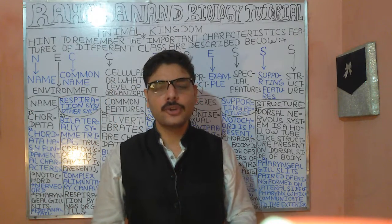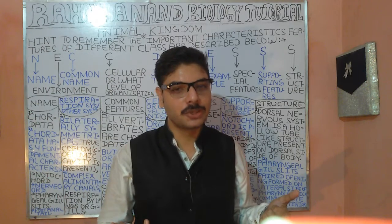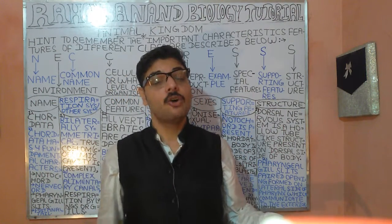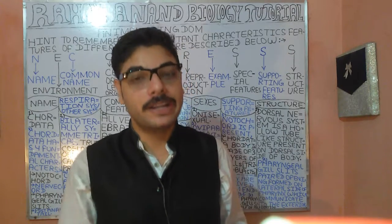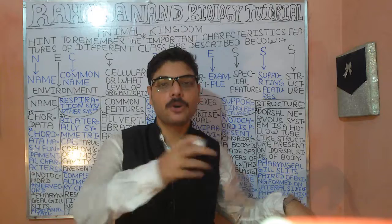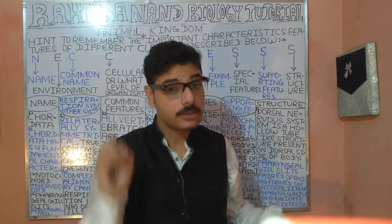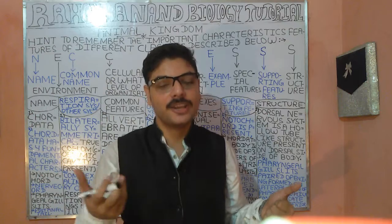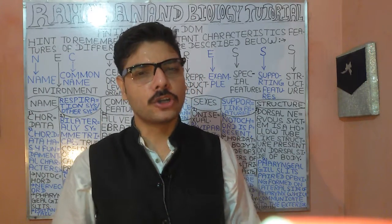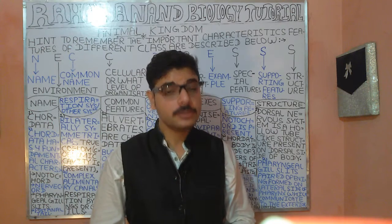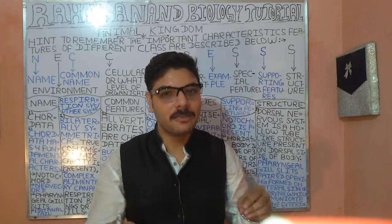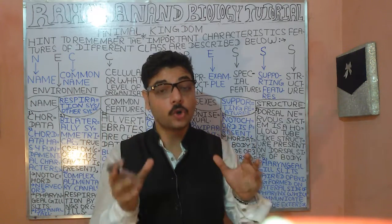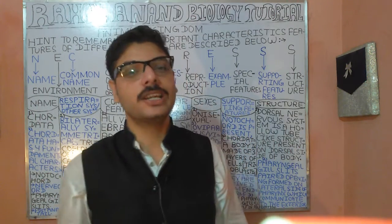Regarding sexes, chordates are particularly unisexual and can be oviparous as well as viviparous, meaning they can produce eggs or give birth to young ones directly. An important characteristic is that during early embryonic development, the notochord is replaced by cartilaginous or bony vertebrae as the organism attains adult form.